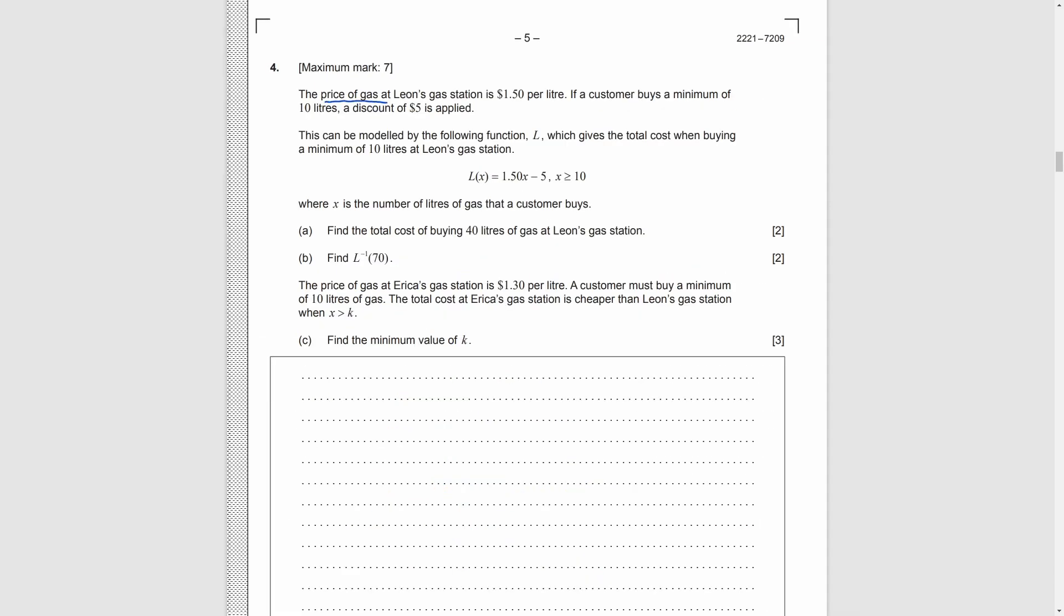Question 4. Price of gas at a station is 1.5. And the function which represents the total cost is given in here. X is the number of liters of gas. In part A, we want to bind 40 liters, and we want to know the cost. So, we just need to put it into the formula. L(40) is 55.